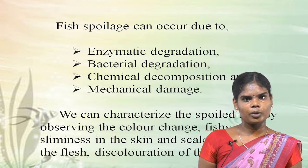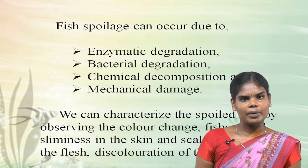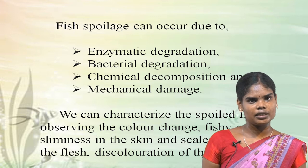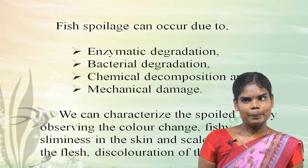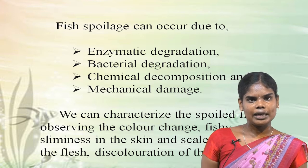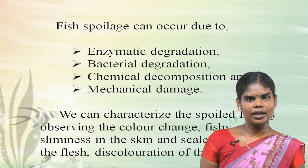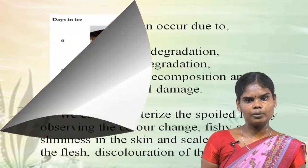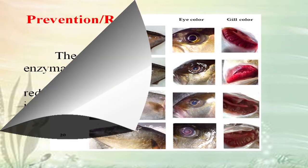How can we characterise spoiled fish? We can characterise spoiled fish by observing certain characteristics: change in colour, texture, odour and appearance, fishy smell, sliminess on skin and scales, and discolouration of the backbone. These are the common characters for identifying spoiled fish.